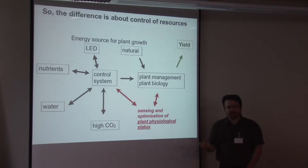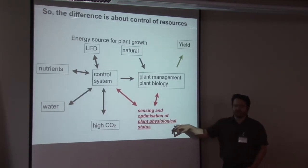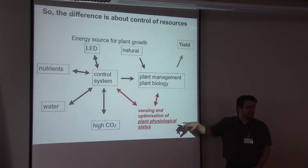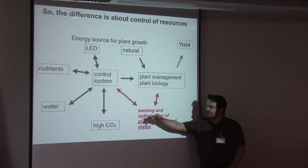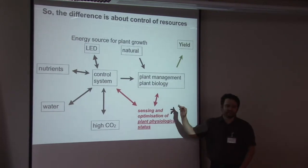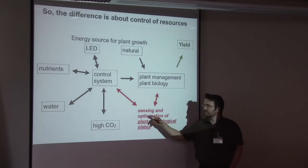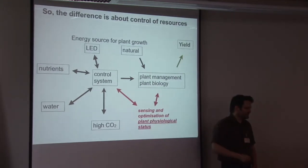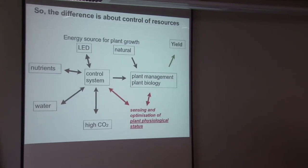But there's also another opportunity to put something else in, and that is sensing and optimizing the plant's physiological status. And there is technology now which enables us to do this. So we could actually put an extra loop in here where we could sense the photosynthetic potential, even the health of the plants, and this can be fed back to a control system and then adjusted accordingly. And I'll explain more about that in a minute.